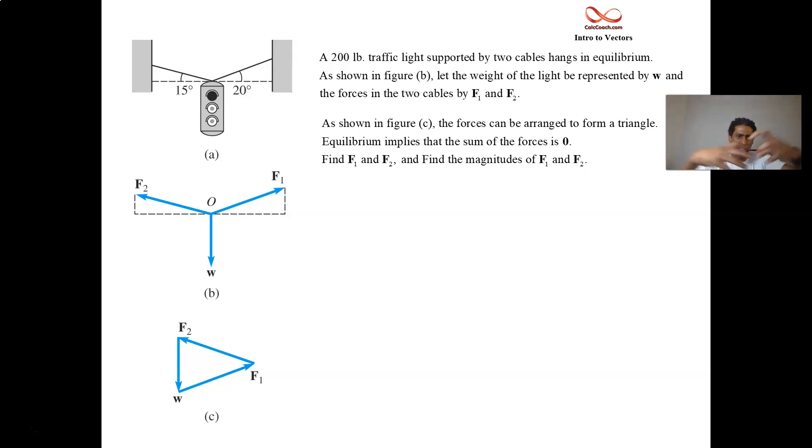There's the tension in the cables and then the weight of the traffic light drawn out in vectors, attached at the point of attachment, we call that point O. We have the vector F1, which goes with the 20 degree, the vector F2, which goes with the 15 degree, and then the vector W to denote the weight of the traffic light.